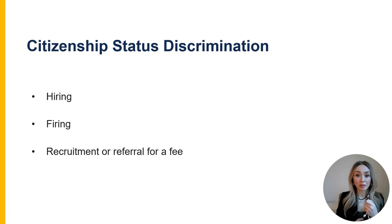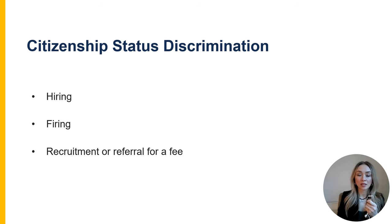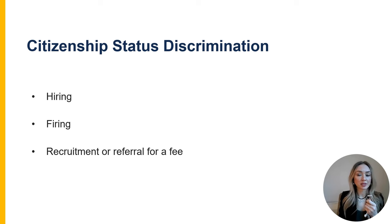The first type of prohibited discrimination is discrimination based on citizenship status. The anti-discrimination law that IER enforces prohibits discrimination on the basis of citizenship or immigration status in hiring, firing, and recruitment or referral for a fee. The people who are protected under this part of the law are U.S. citizens, U.S. nationals, lawful permanent residents, and workers granted asylum or refugee status. For example, if an employer refuses to hire a person because the person has refugee status, or if an employer has a policy that limits hiring to U.S. citizens only with no legal justification.